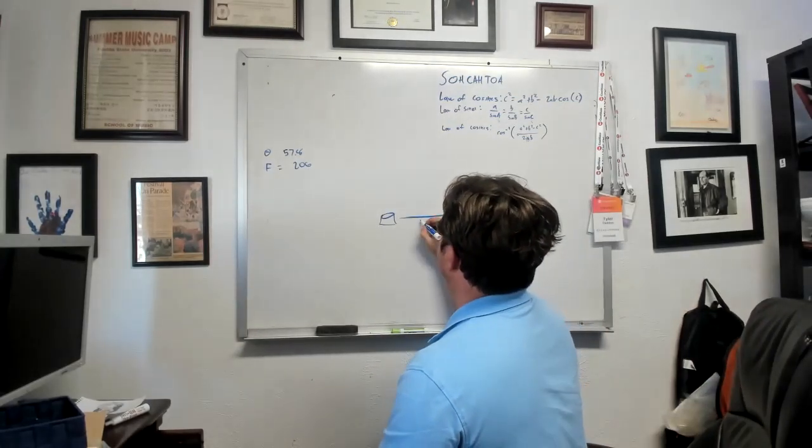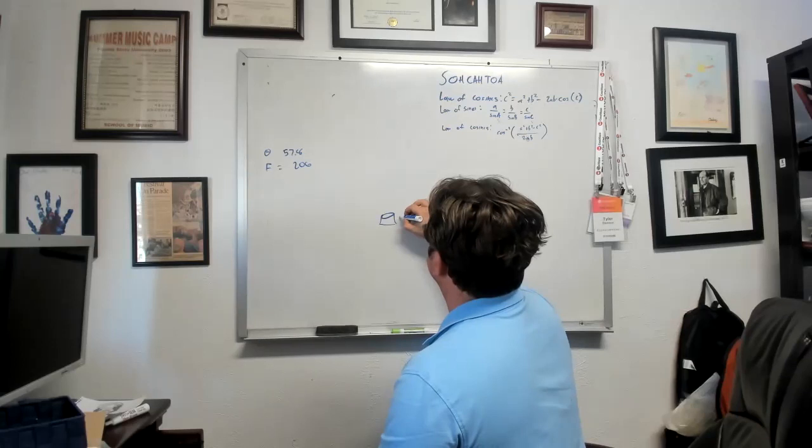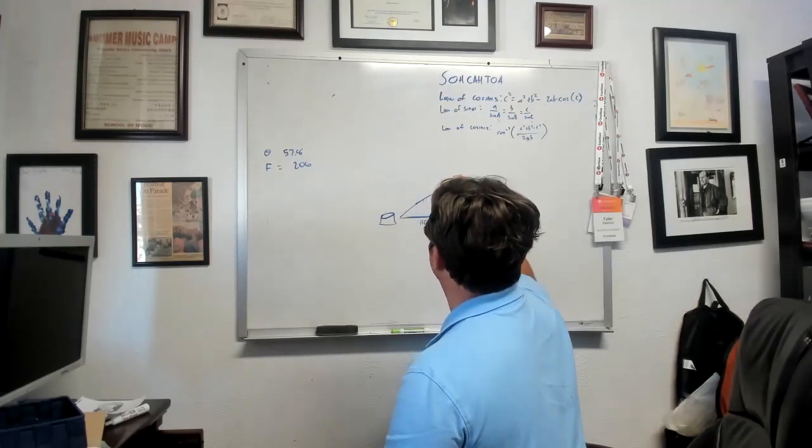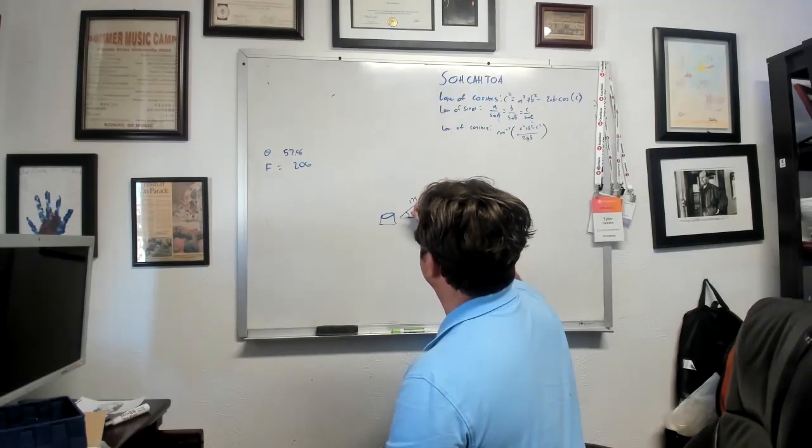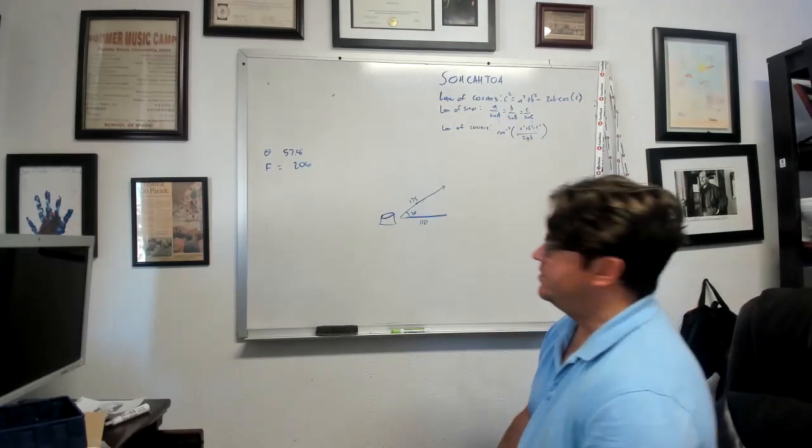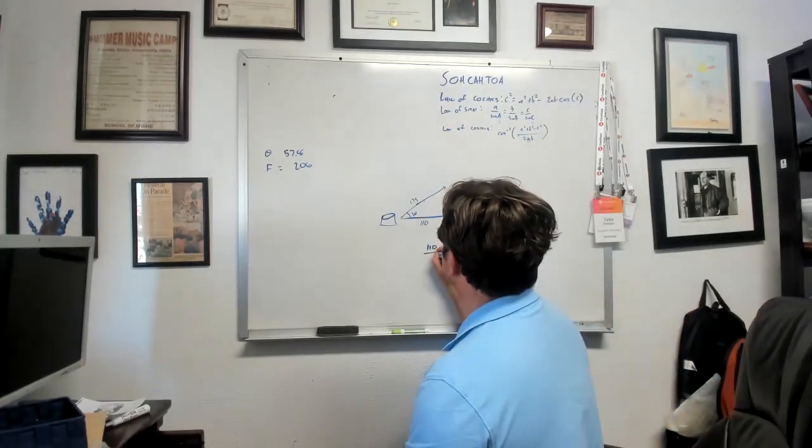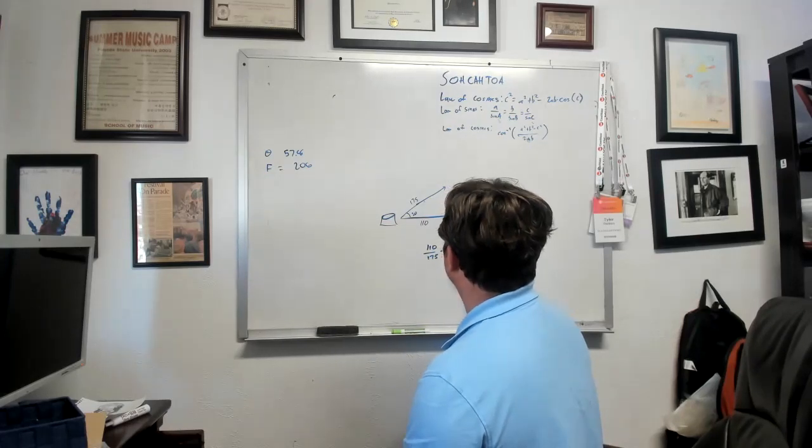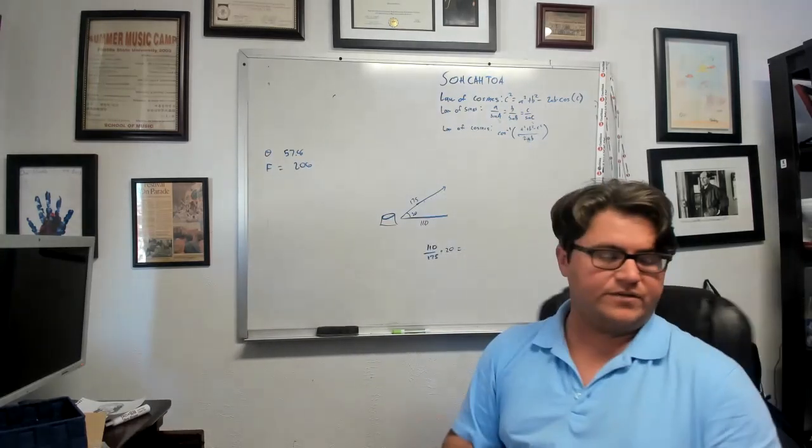So we're going to do 110 and we're going to do 175 and we know this is at a 20 degree angle. Now we should be able to do that same thing. 110 over 175 times 20. And that should give us our angle.